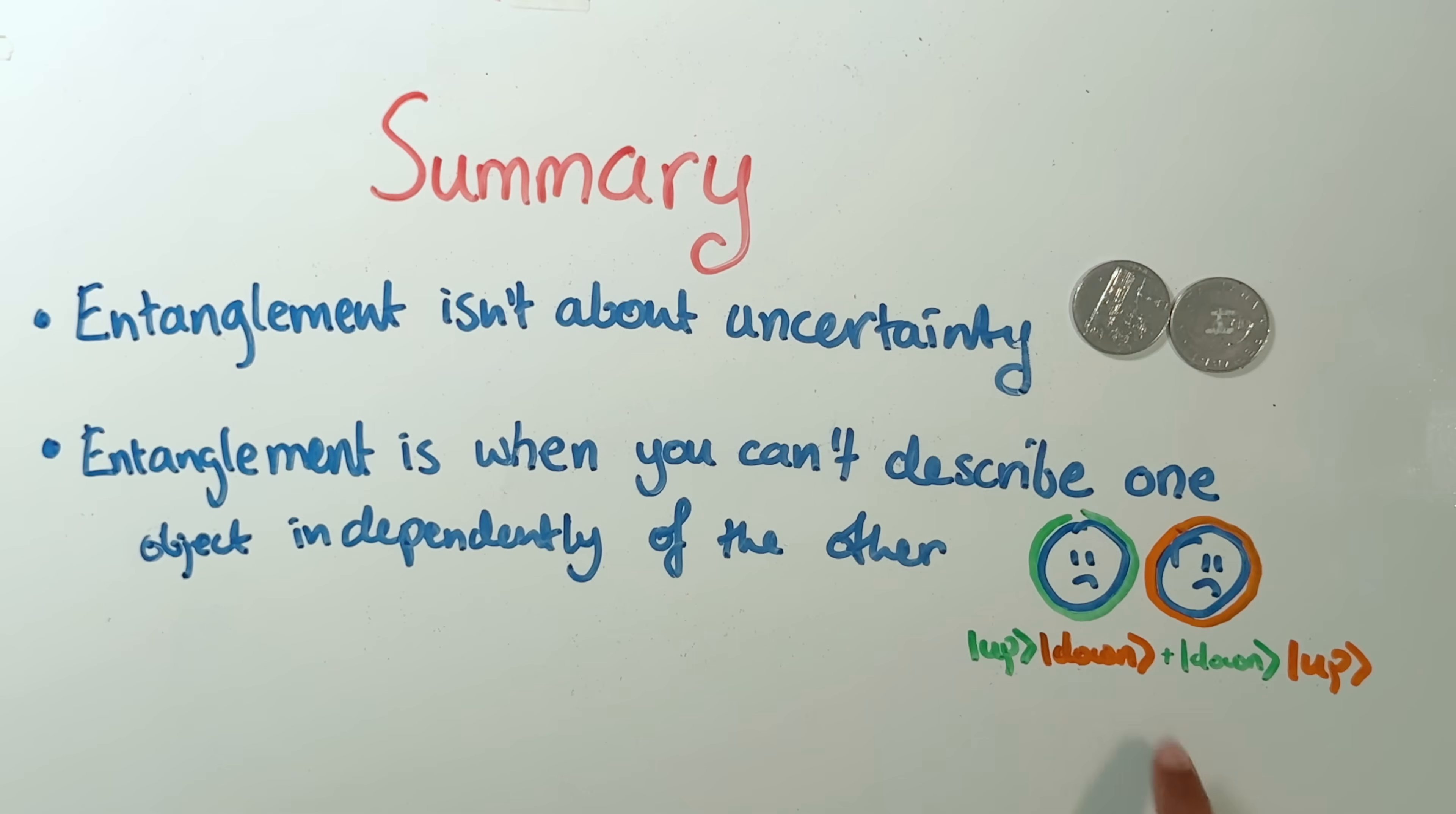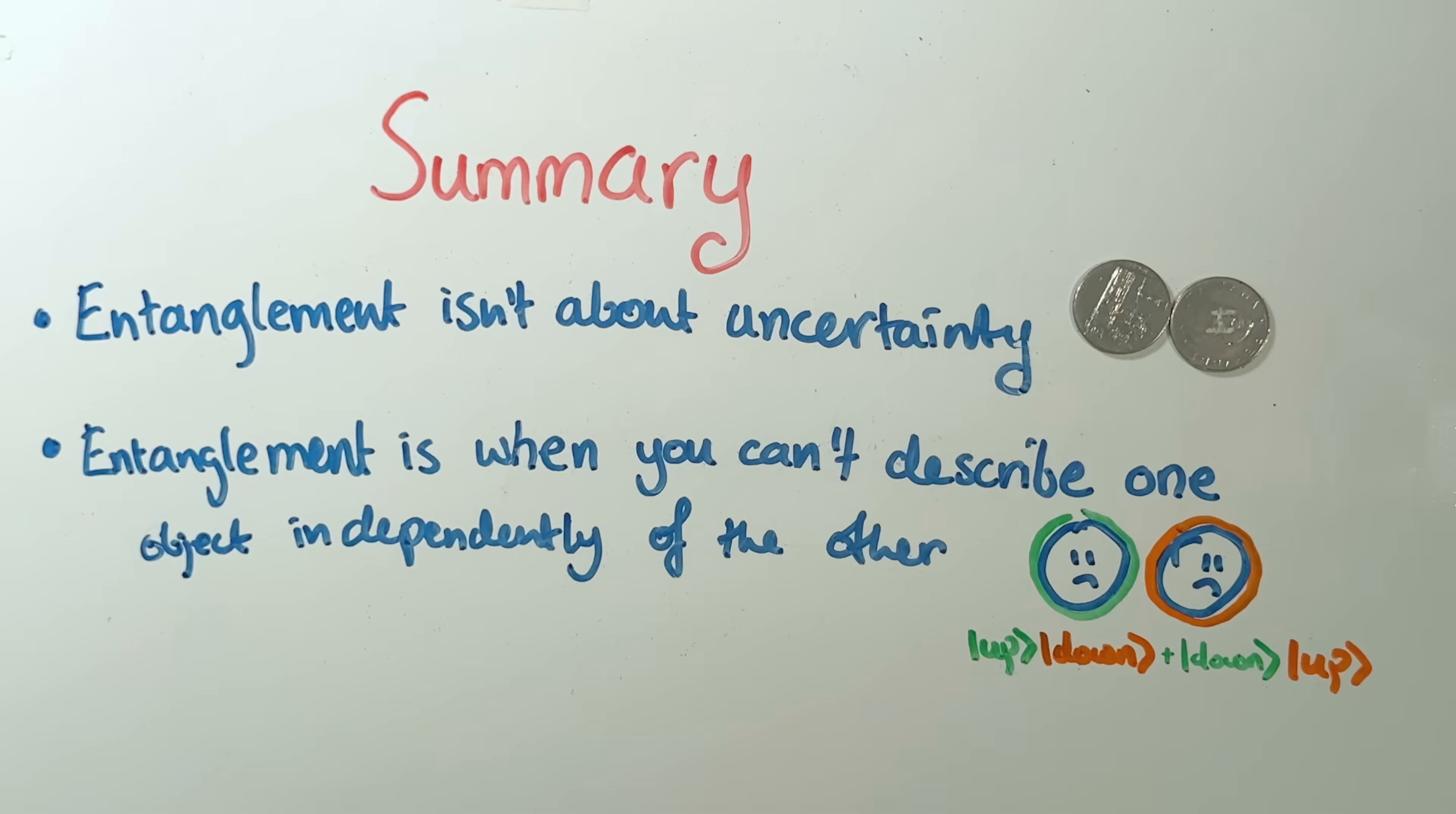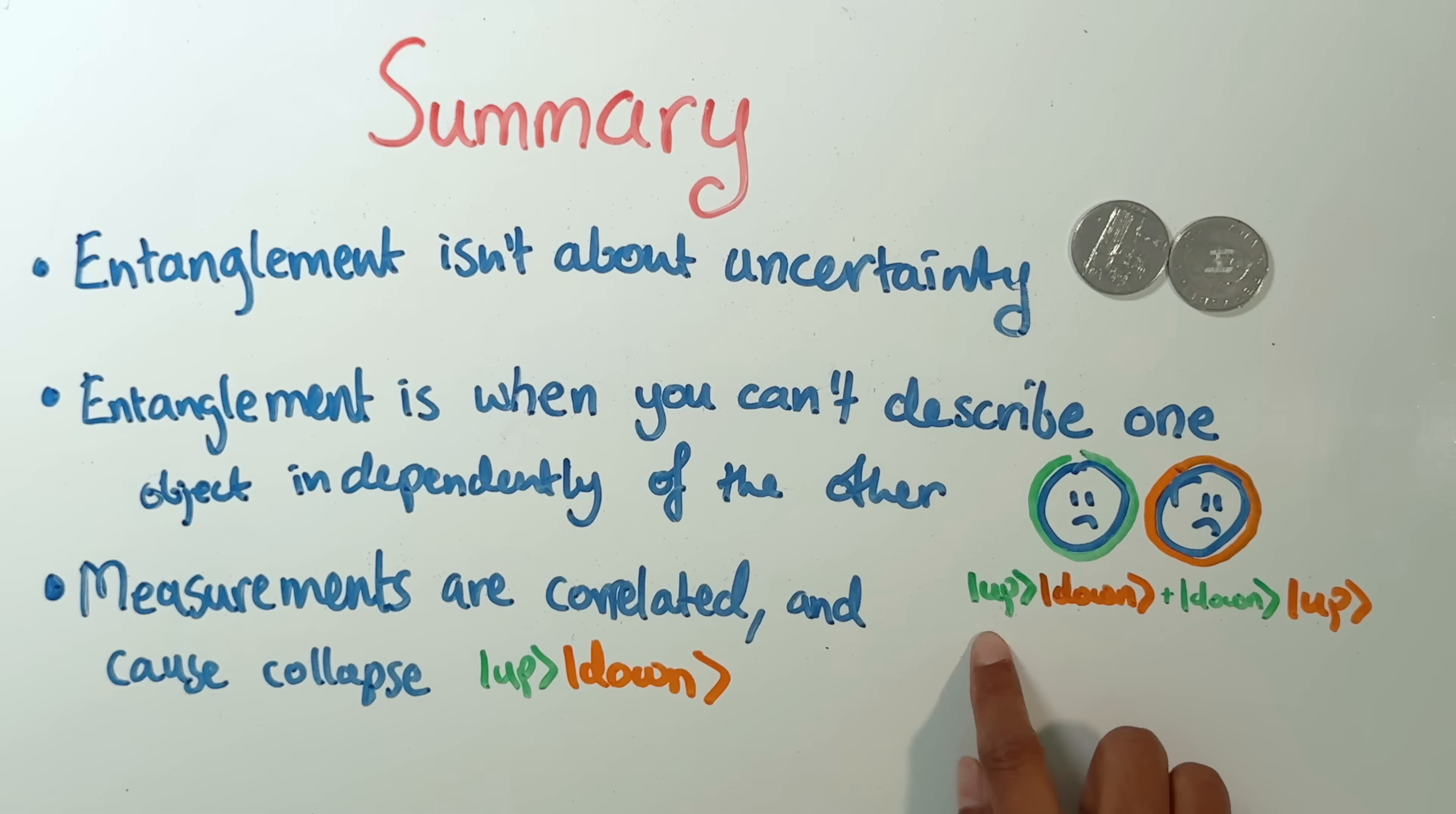The example we used here was a state for two electrons, where if the first one is up, the second one is down, and if the first one is down, the second one is up. It's not possible to describe this state just in terms of one electron at a time. You also learned that if you did an up-down measurement on this state, then the outcome for this electron is correlated with the outcome for that one. If this one is up, that one is down, and vice versa. But not only that, the measurement causes the state to collapse. So it goes from being this to just being this.